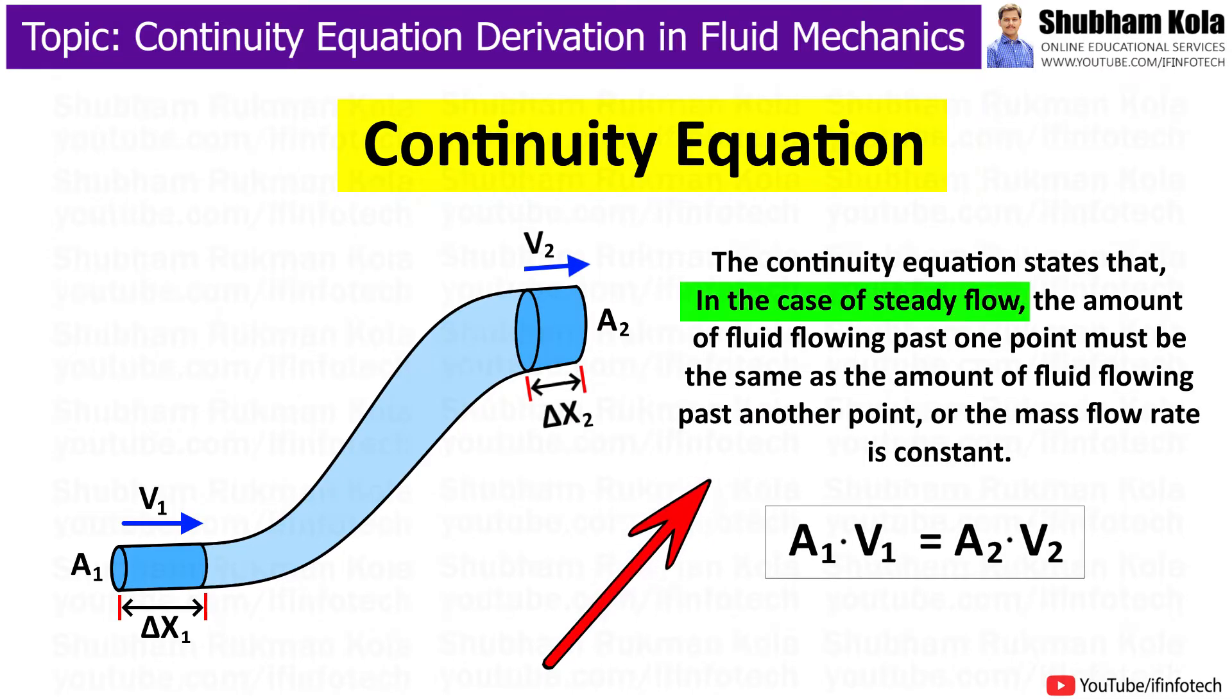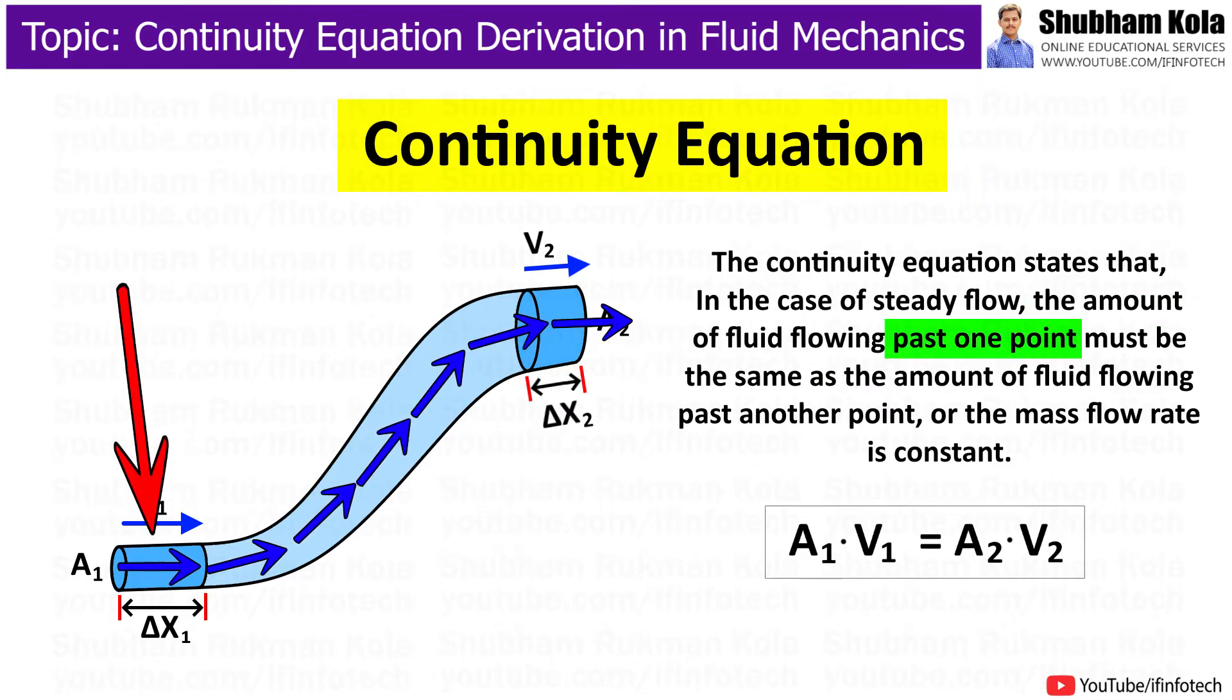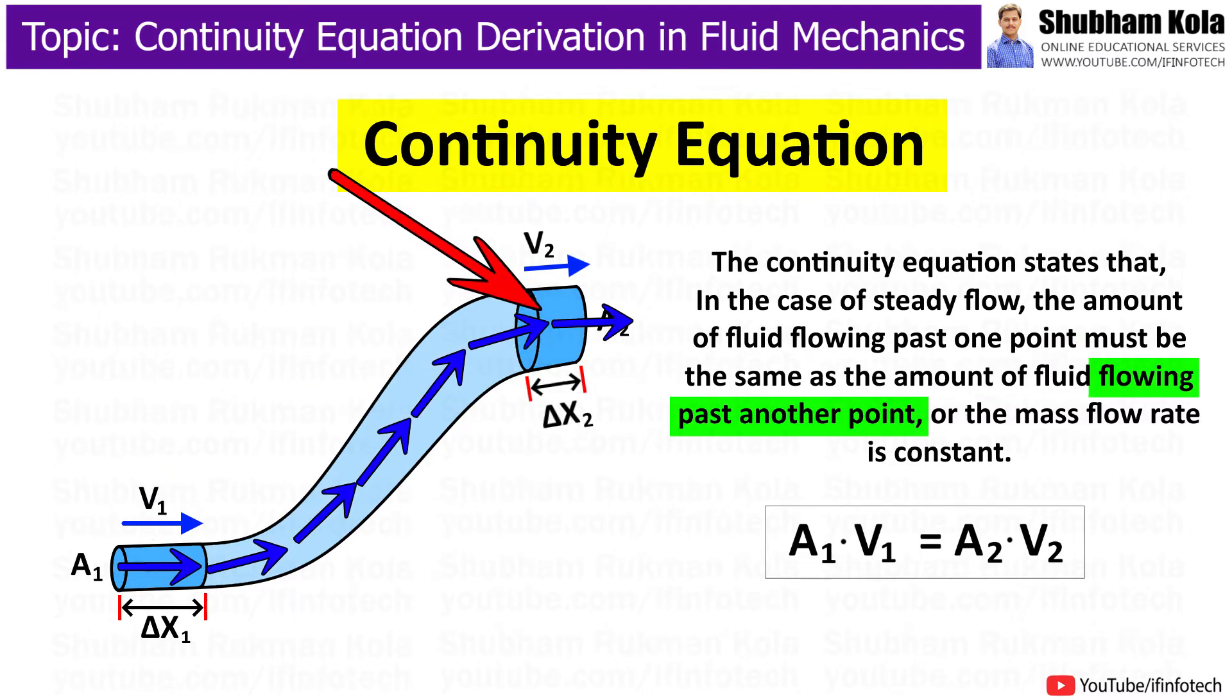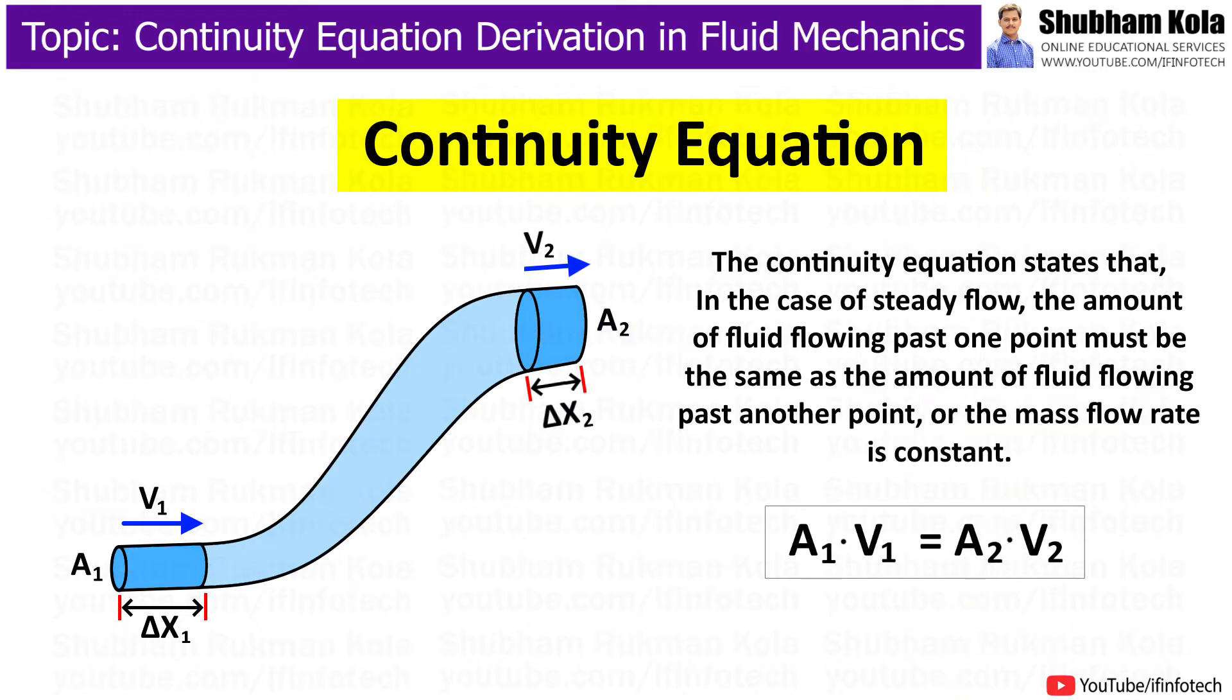The continuity equation states that, in the case of steady flow, the amount of fluid flowing past one point must be the same as the amount of fluid flowing past another point, or the mass flow rate is constant. It is essentially a statement of the law of conservation of mass.